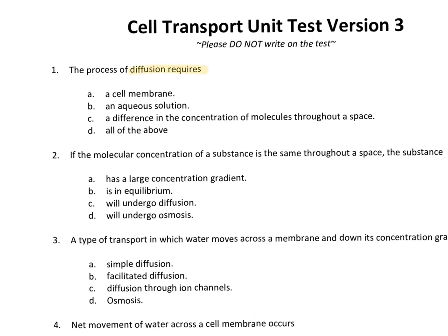Diffusion is just going from high to low. And the answer is C. You don't need an aqueous solution. Now, what was the trick here? I can see how a lot of people that studied very hard picked all the above. Why? Because they spent four or five days reading cell membrane, aqueous solution, moving high to low, facilitated diffusion — all these terms over and over again. They got it in their head and then they saw this question and automatically picked all the above. Do you agree that's what happened? I can see that.